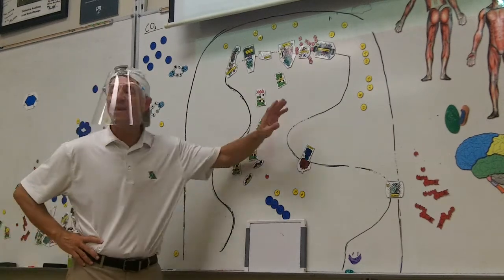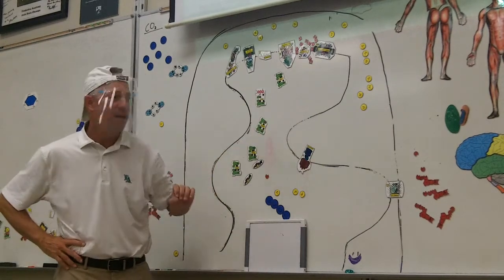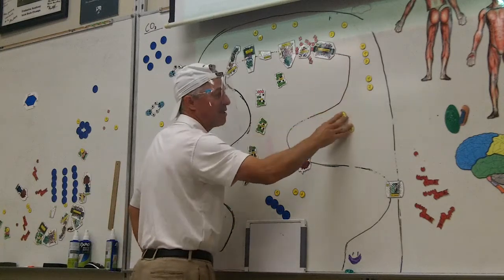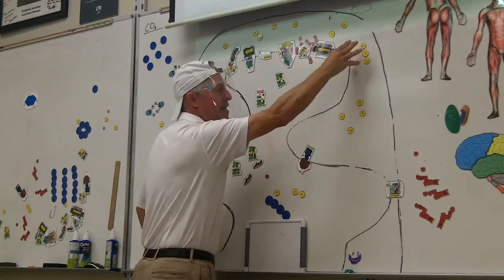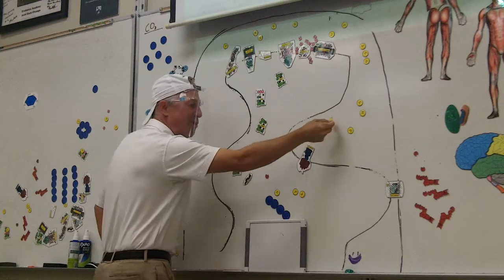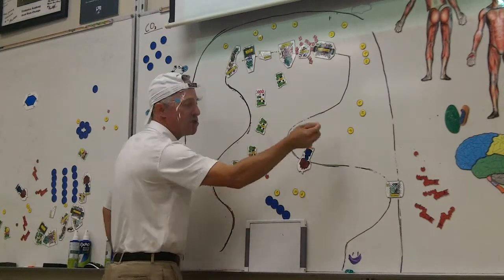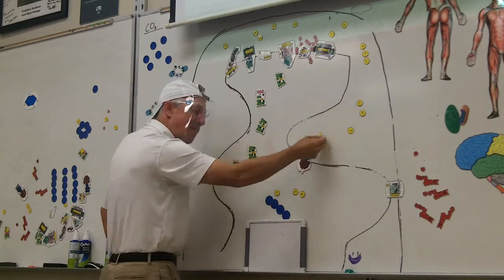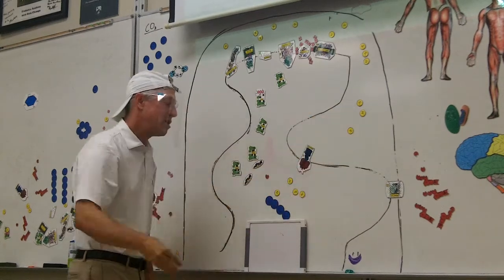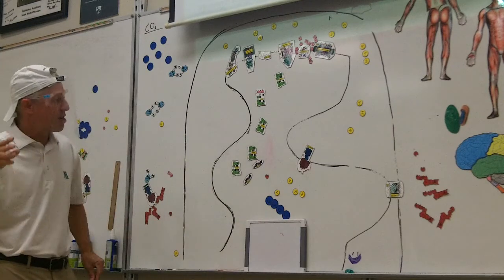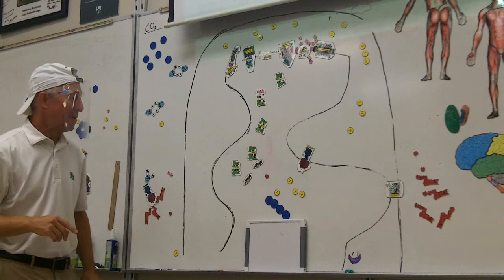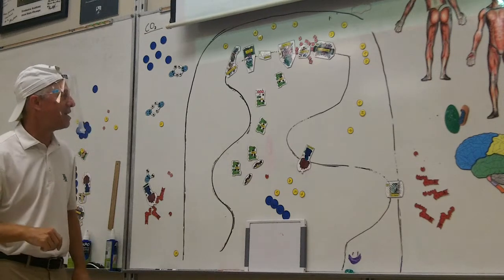We call that chemiosmosis. Chemiosmosis means these are chemicals and they move from high to low concentration, just like water moves from high to low concentration. And they come back through ATP synthase to make ATP. It's also known as oxidative phosphorylation.